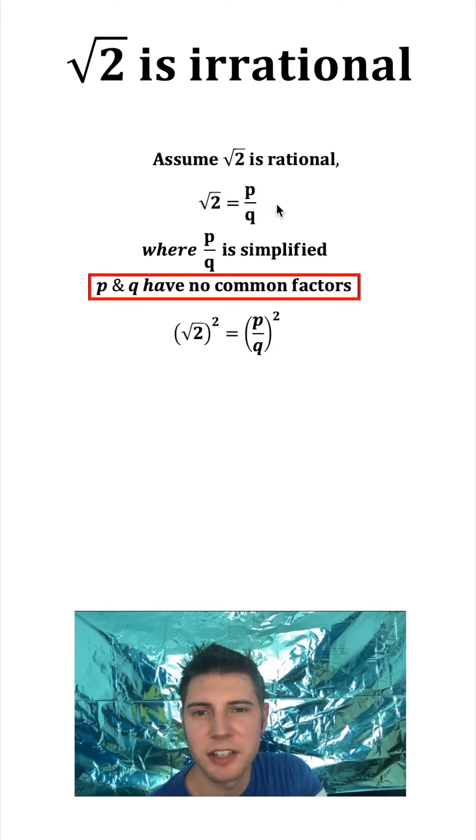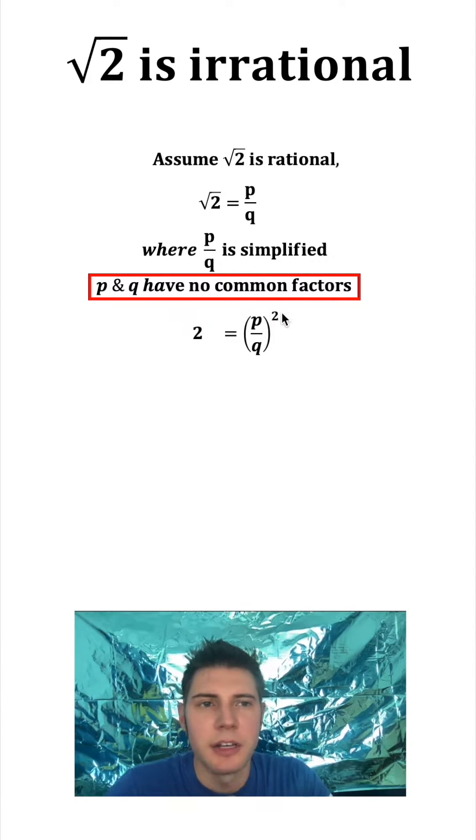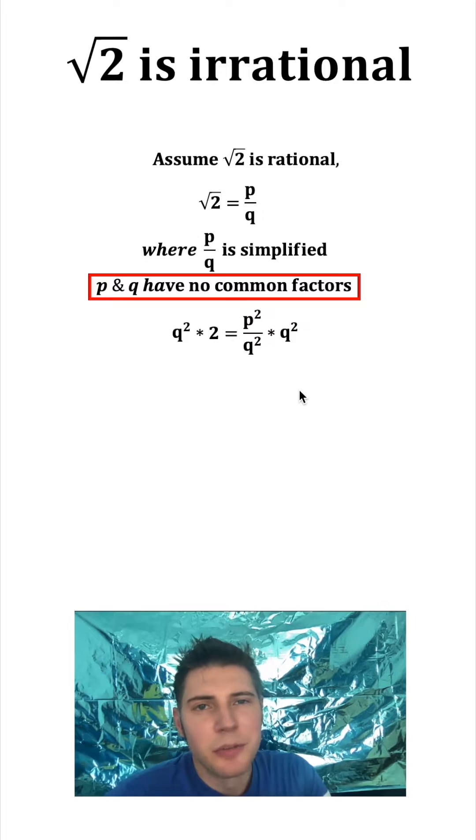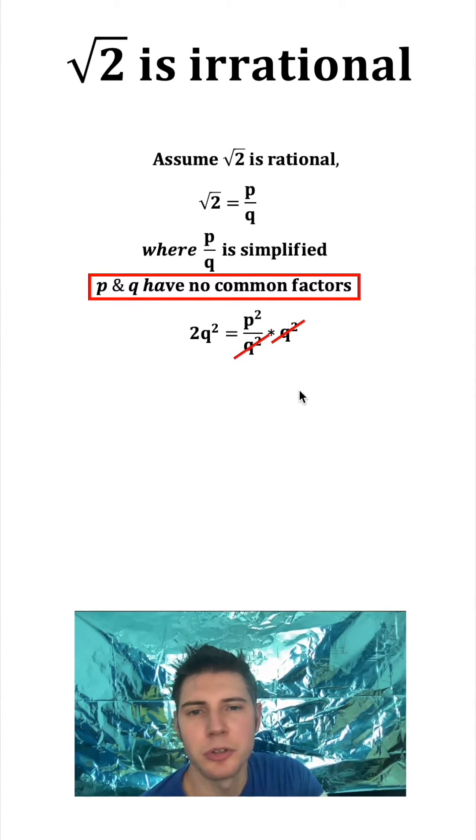We can square both sides of the equation. On the left-hand side, the square root and the 2 are going to cancel each other out and give us just 2. And on the right-hand side, the 2 exponent is going to distribute to both the P and the Q. So if we multiply both sides by Q squared, these two are going to cancel, and this side can become 2Q squared.